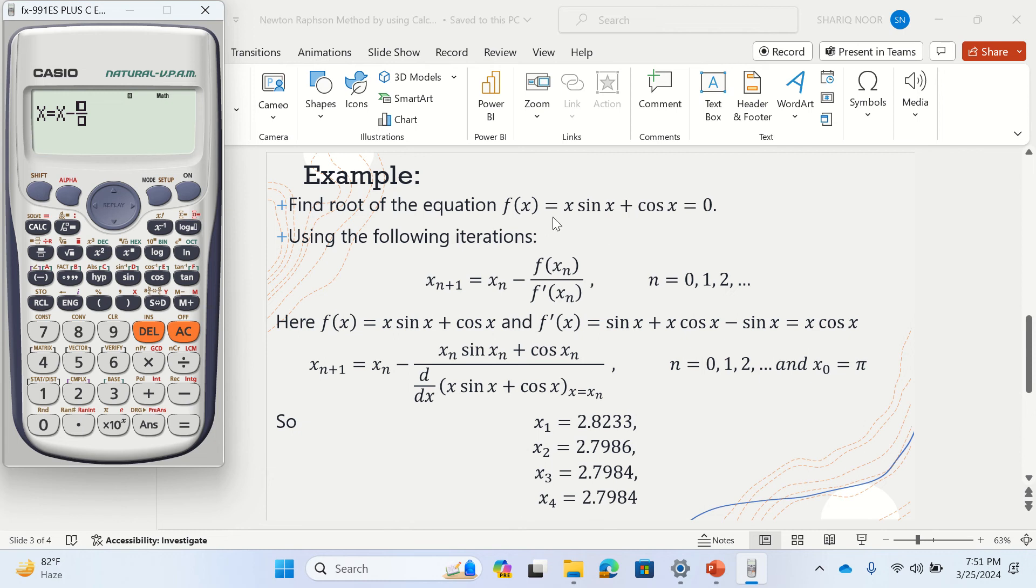In the numerator, I'll be using this function directly, which is x sine x. That is x, then I'll simply write sine, and then I'll write x again. So it's x sine x, then we can close the bracket. Plus cos x. So I'll just write cos, and then I'll use shift with cos x. And then you can close the bracket.